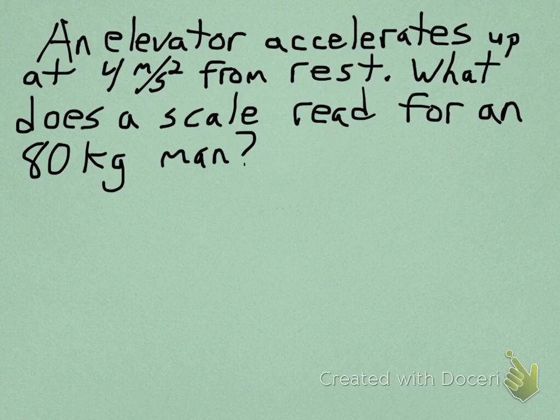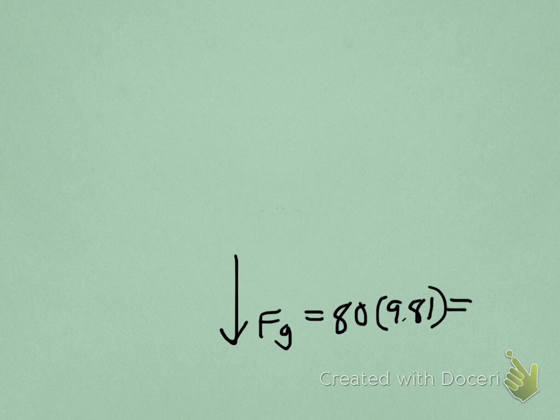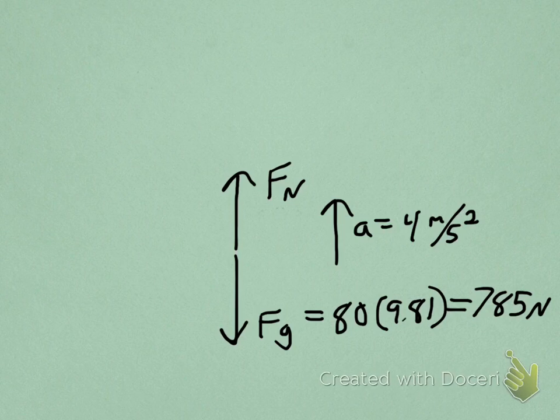In order to do this problem we first have to draw a free body diagram. So we start off with the force of gravity going down. And that is 80 times 9.81, so you take the mass multiplied by gravity. It gives you 785 newtons. You then have the normal force going up, which we do not know. And the acceleration is also up, 4 meters per second squared. It does not matter what direction the elevator is moving, only the direction that the acceleration is.